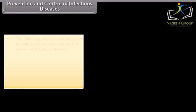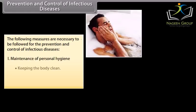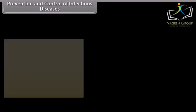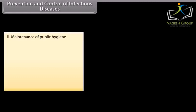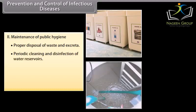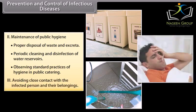Prevention and control of infectious diseases. The following measures are necessary for prevention and control: maintenance of personal hygiene, keeping the body clean, consumption of clean drinking water and food, maintenance of public hygiene, proper disposal of waste and excreta, periodic cleaning and disinfection of water reservoirs, observing standard practices of hygiene in public catering, and avoiding close contact with infected persons and their belongings.